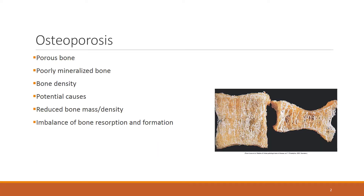Osteoporosis is a metabolic bone disease that causes a porous bone appearance — some would call it Swiss cheese-like. After bone loss, the bone loses mineralization and strand structure, so bone density is decreasing. Osteoporosis is a disease of multifactorial origin.